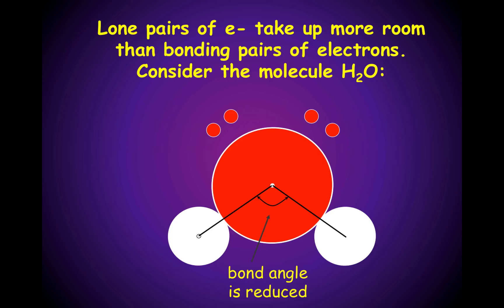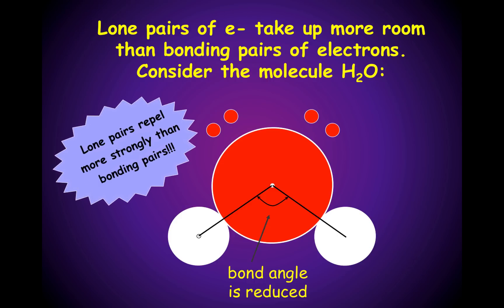Lone pairs of electrons take up more room than bonding pairs of electrons. Consider the molecule of water. Since the lone pairs repel more strongly than bonding pairs, this forces the bond angle between the oxygen and hydrogen atoms to be reduced. Because lone pairs take up more space, this is why the water molecule is bent and not linear.